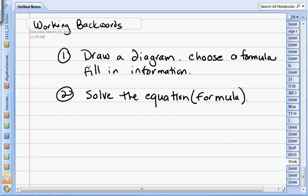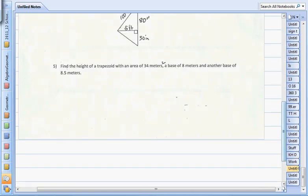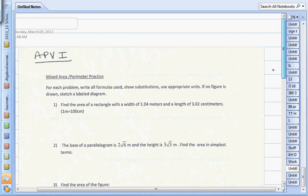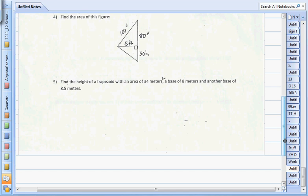When we fill in the information that we're given into the formulas, it turns into basically a solving for X problem. We'll start off with the first page of the mixed area perimeter practice and take a look at number five, which says find the height of a trapezoid with an area of 34 meters squared, a base of 8 meters, and another base of 8.5 meters.